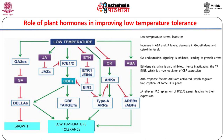The role of plant hormones in improving low temperature tolerance: low temperature stress leads to an increase in ABA and JA levels, a decrease in ethylene and cytokinin levels. JA and cytokinin signaling is inhibited leading to growth arrest. Ethylene signaling is also inhibited, hence inactivating the transcription factor ethylene insensitive EIN3, which is a negative regulator of CBF expression. ABA response factors (ABFs) are activated which regulate transcription of some core genes. JA relieves JA's repression of ICE1 and ICE2 genes leading to their expression.